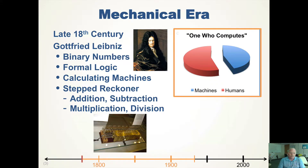In the mechanical era, late 18th century, there was a lot of work on removing errors from the math. Several people were working on concepts that are very powerful in computer science today. Gottfried Leibniz came up with the theory of binary numbers and how to use formal logic. He came up with calculating machines — he actually developed a stepped reckoner that did the four operations of addition, subtraction, multiplication, and division. He had a very profound effect on modern computing.